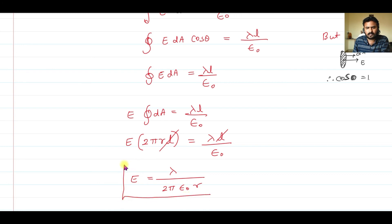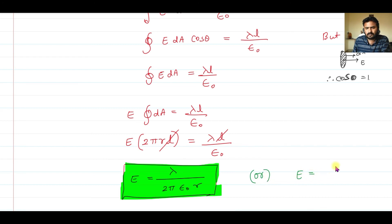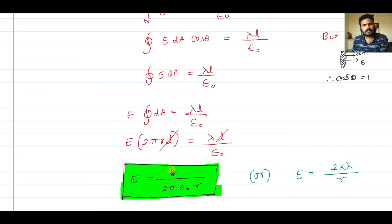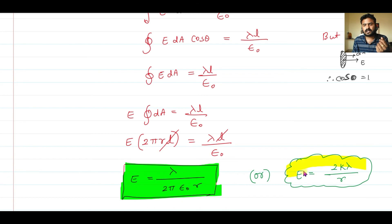So the electric field is E = lambda / (2πε₀r). There is another way to remember it: multiply and divide by 2, giving 2λ / (4πε₀r). Since 1/(4πε₀) = K, this becomes E = 2Kλ/r. You can remember the electric field due to a long wire carrying linear charge density lambda as either lambda/(2πε₀r) or 2Kλ/r.